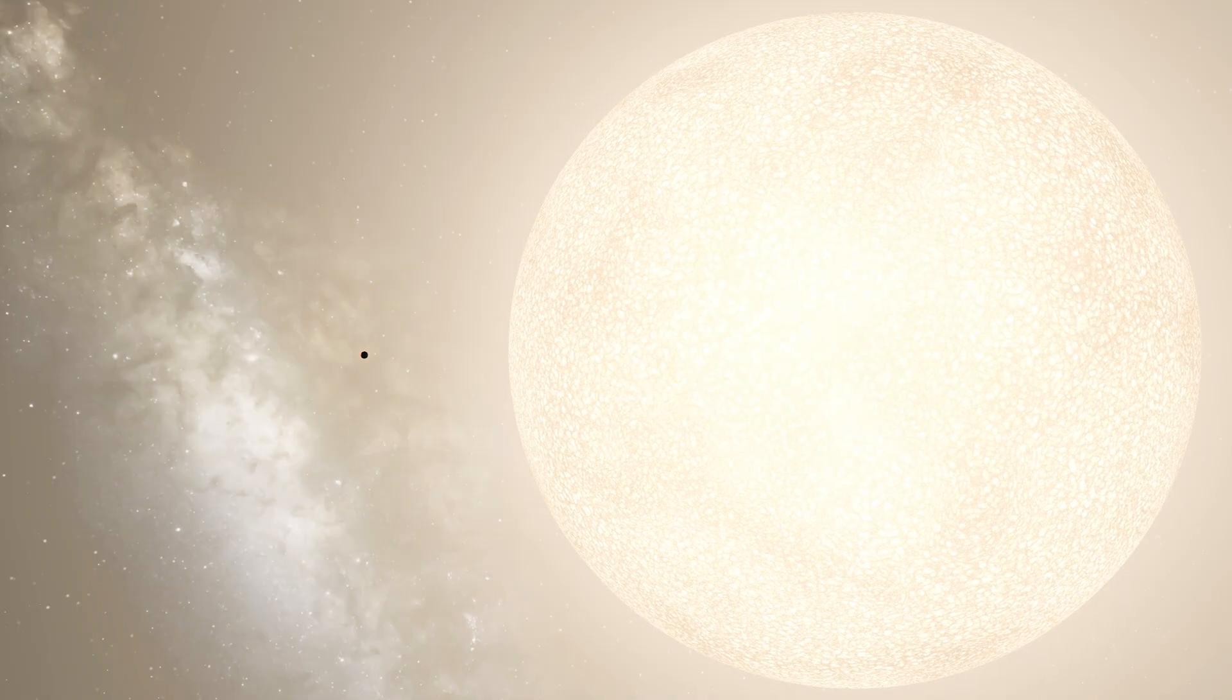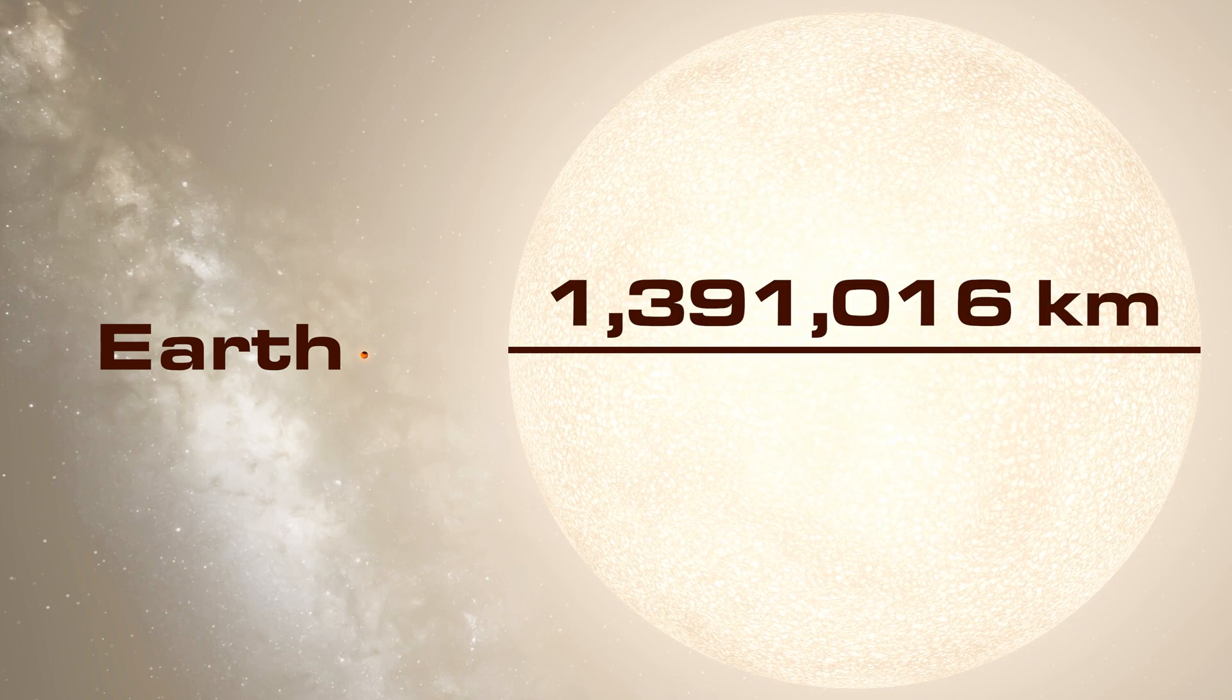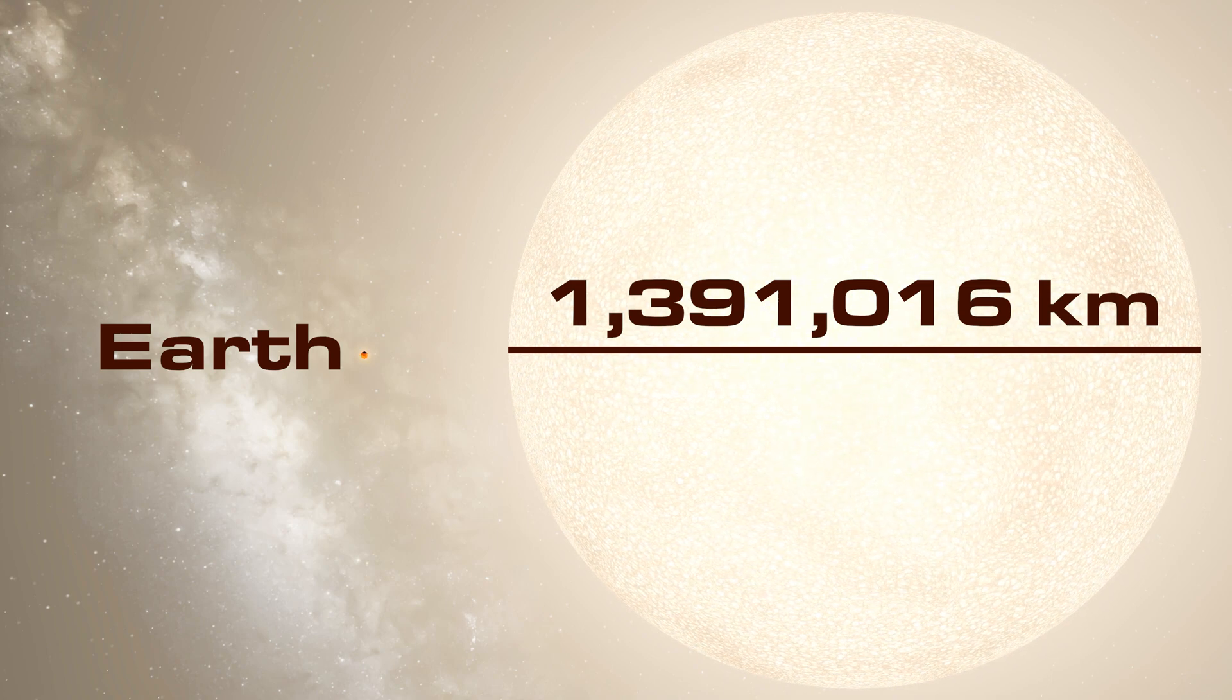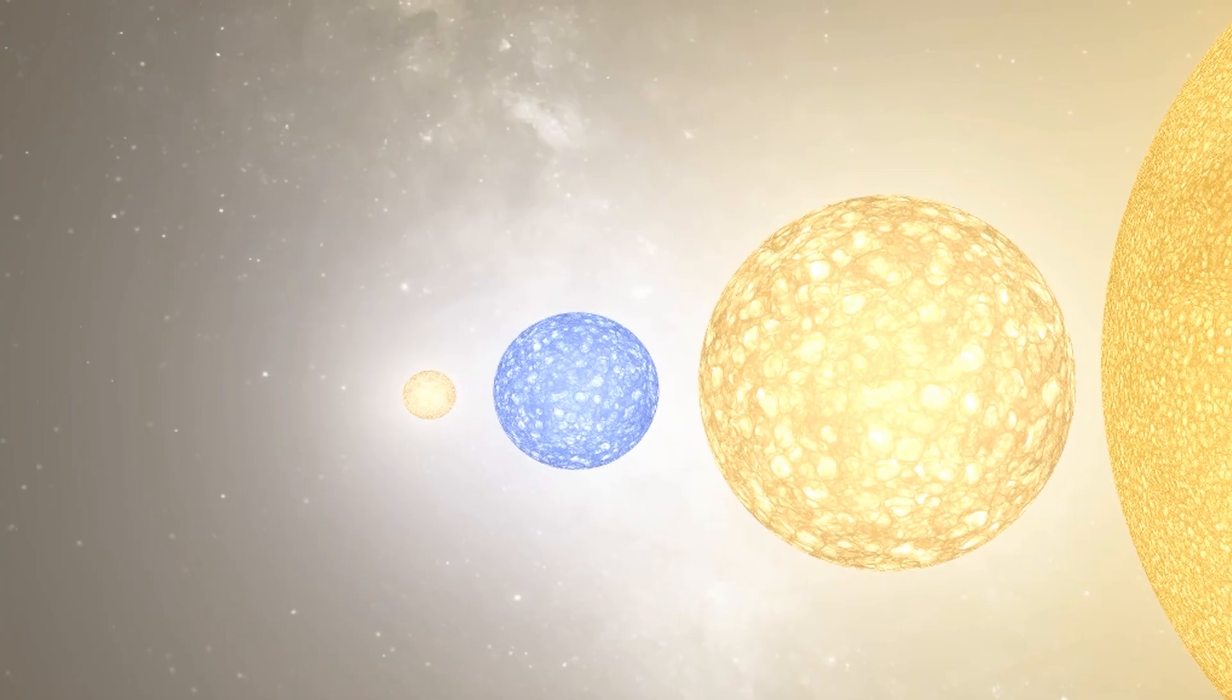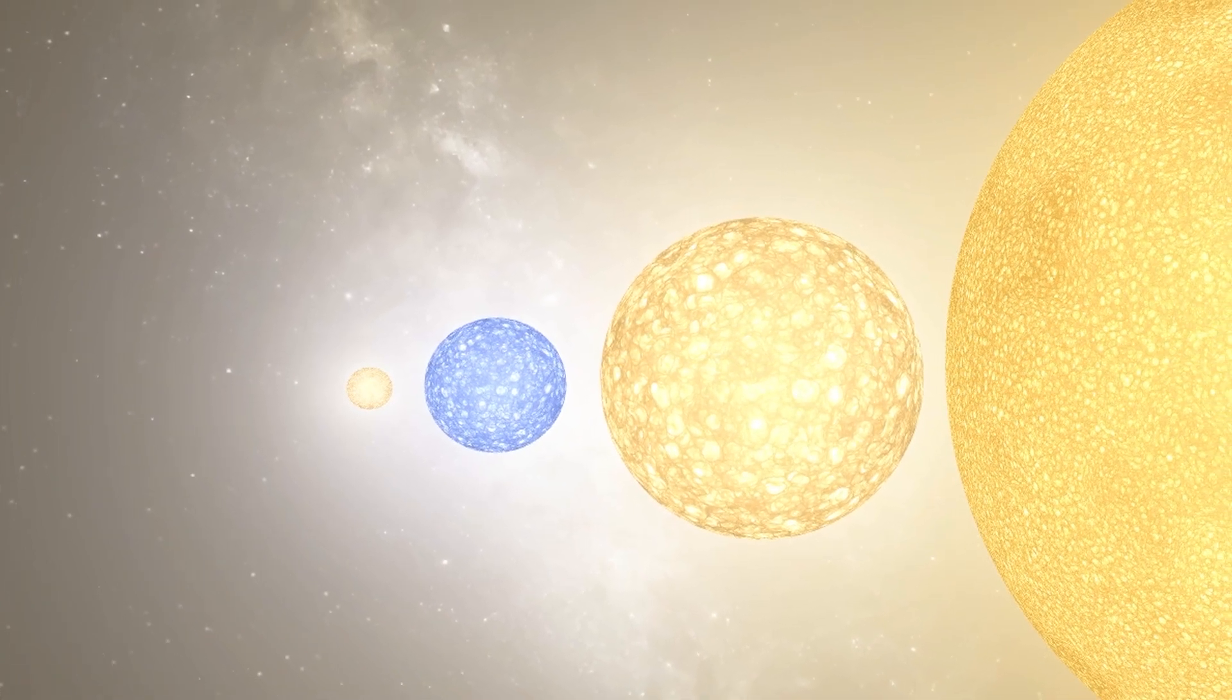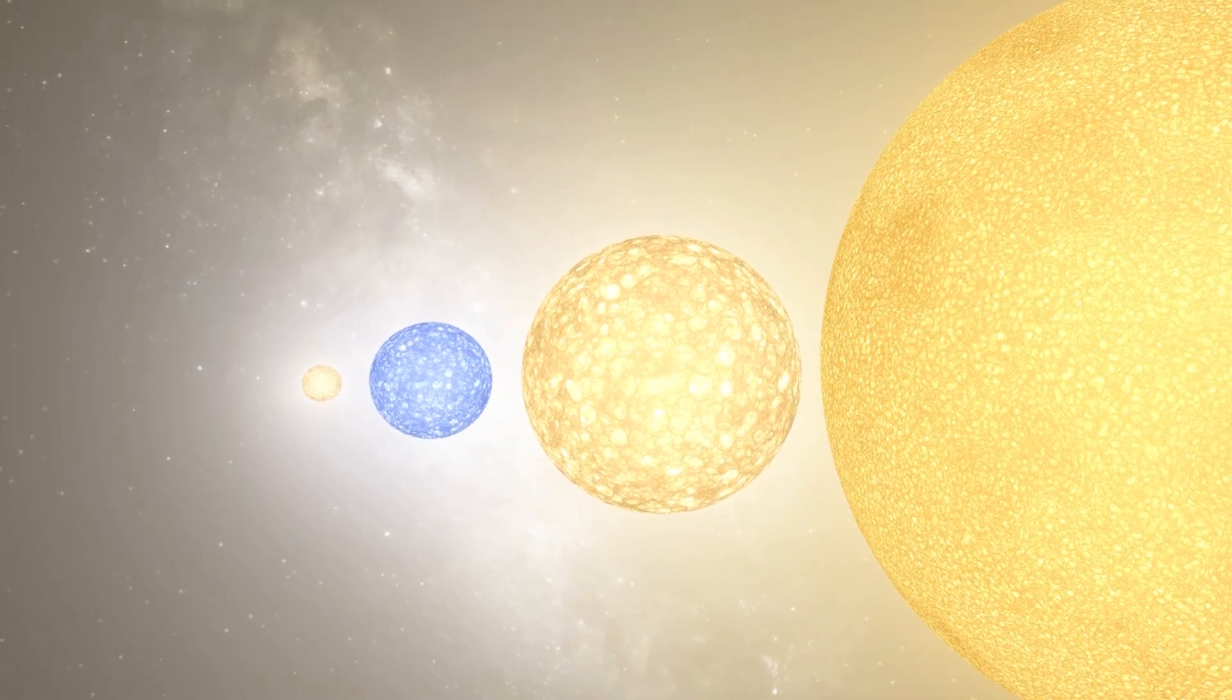The Sun is the largest object in our solar system. With a diameter of 1,391,016 kilometers, it's about 109 times wider than the Earth. However, if we compare the Sun to other known stars, it turns out the Sun is pretty average in size and is merely a tiny dot when compared to some of the largest stars.